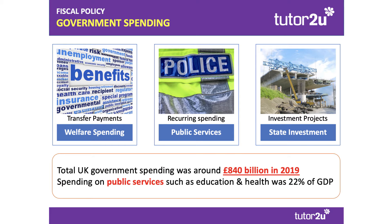There are three main categories of government spending. First of all, transfer payments or welfare spending, otherwise known as social security. This is where the government enacts a transfer from one group of taxpayers to perhaps benefit recipients. An example would be the state pension or the job seekers allowance.